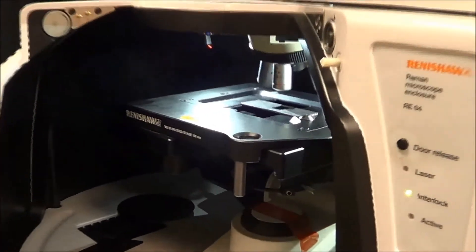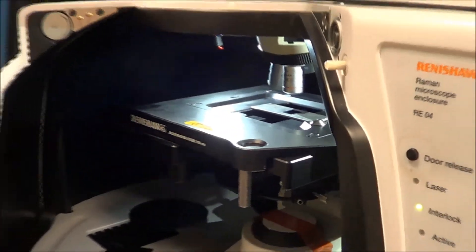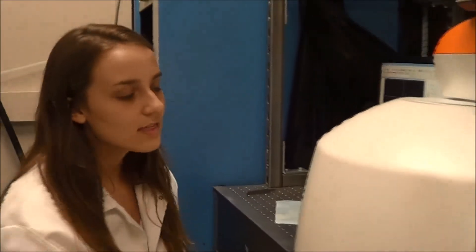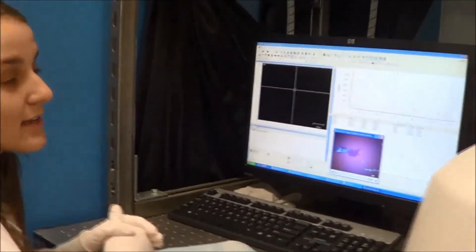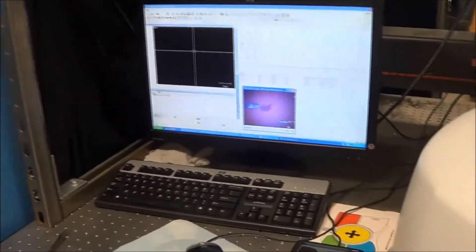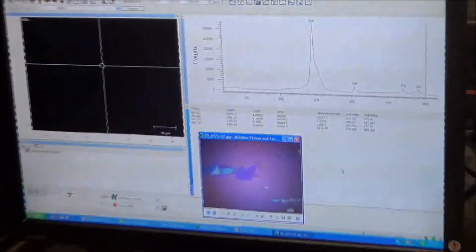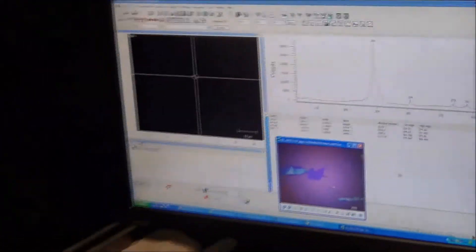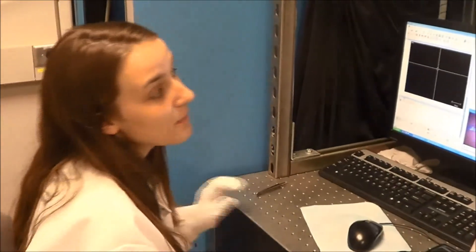The next step in characterizing our flake is by using the Raman tool. Here, I have uploaded my sample into the chamber. This tool works based on the principles of Raman spectroscopy. These peaks help give us a fingerprint of the material loaded, which in our case should be MOSE2 and help identify how thick the material is by giving us a fingerprint of each individual layer.